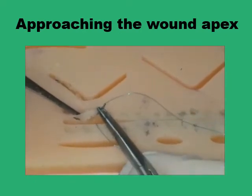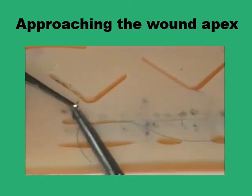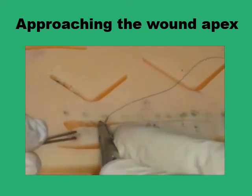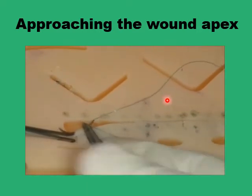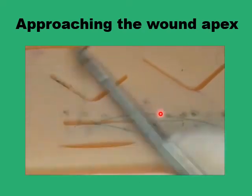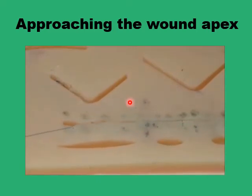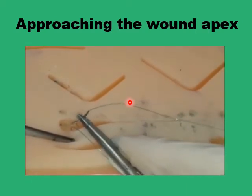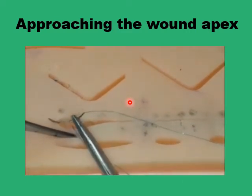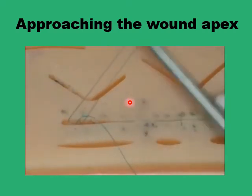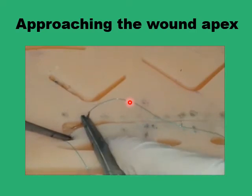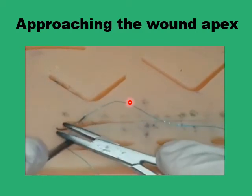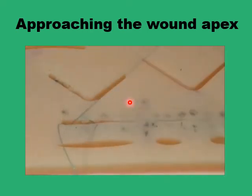Continue in the same manner while approaching the wound apex on the other side, taking the horizontal bites on one side and moving to the other at the same level, progressing forward, perhaps one more bite to reach the apex on this side. Once you've reached the apex, you start fixing the suture line on the other side of the wound — much like we anchored it at the very beginning — with a suture in the subcutaneous plane to anchor the suture line. While retrieving the suture line, you would leave a loop.